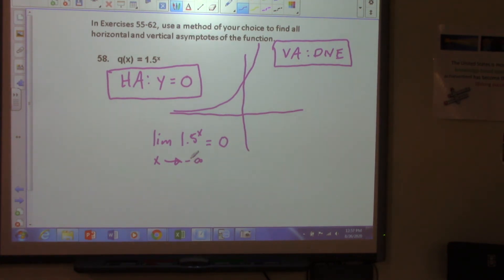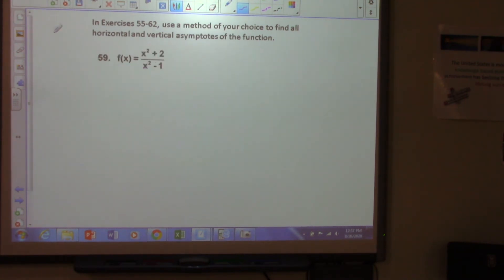What is the limit as x approaches positive infinity? What's the limit as x approaches positive infinity? Yeah, or does not exist. Infinity or does not exist, exactly. Okay, ready? Go on from 58. Okay, 59.